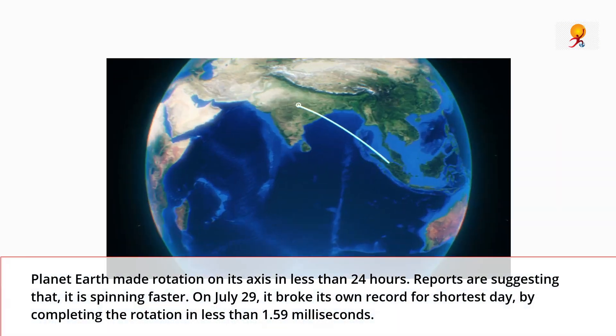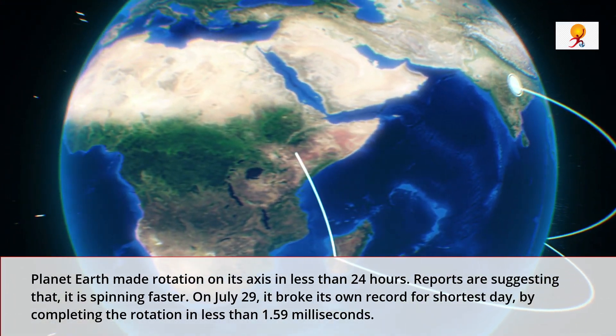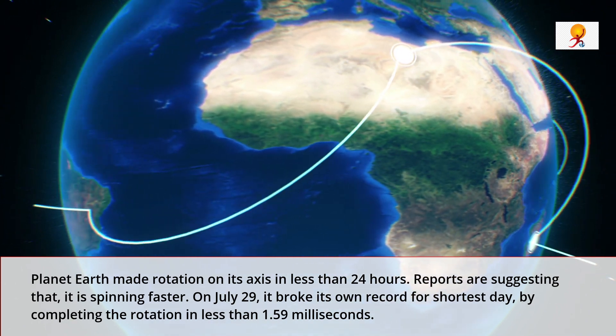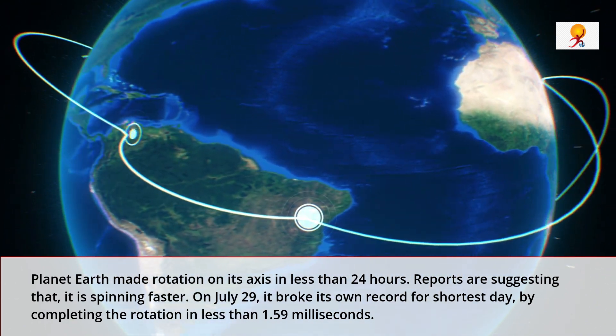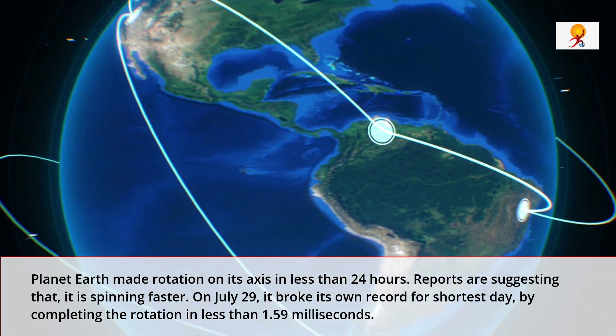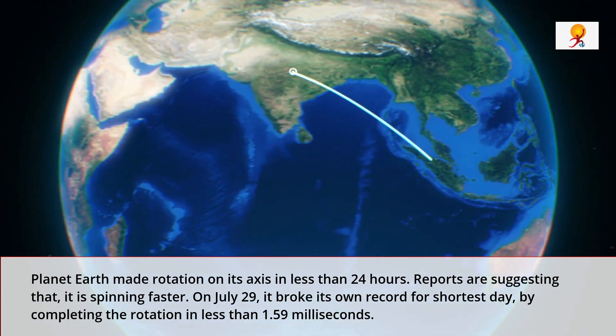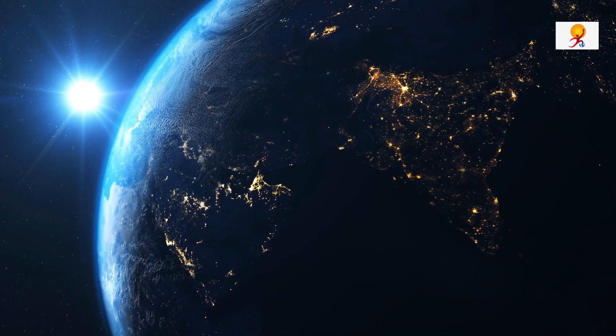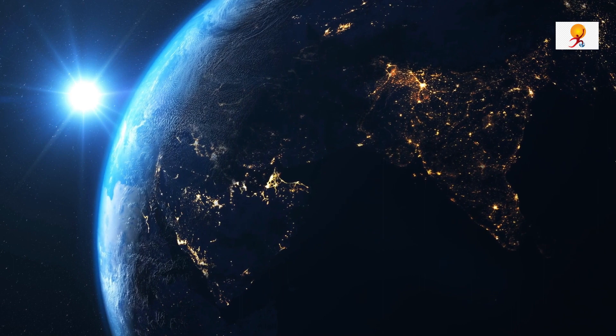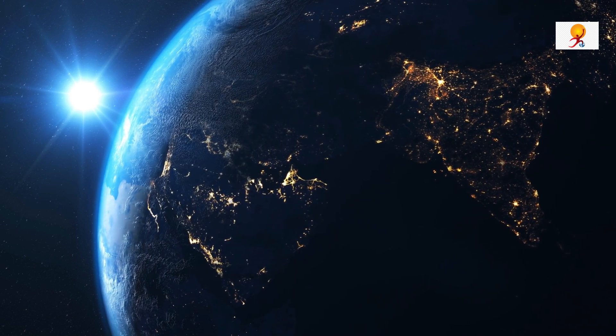As a result of this, the day on Earth was shorter by 1.59 milliseconds than the usual 24 hours a day. Earlier, the shortest day on Earth was observed on 19 July 2020.